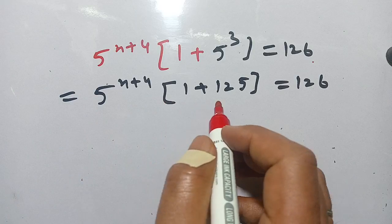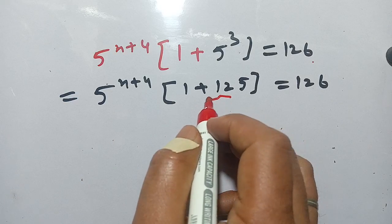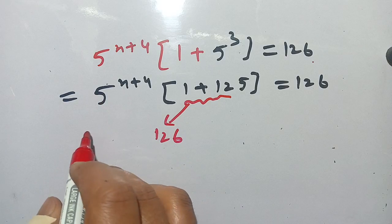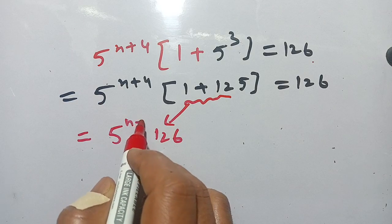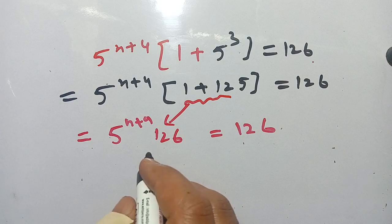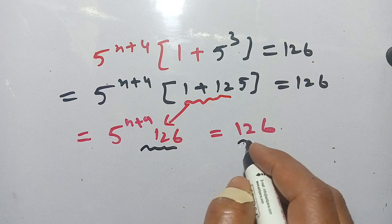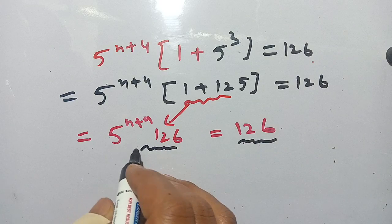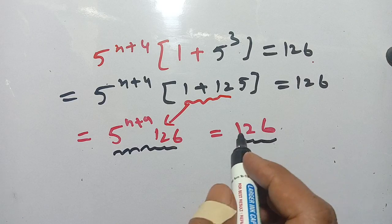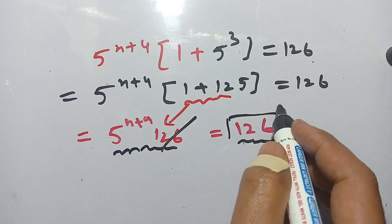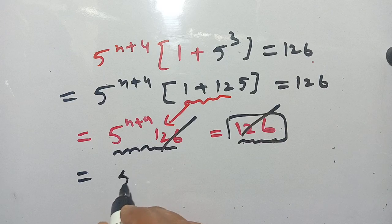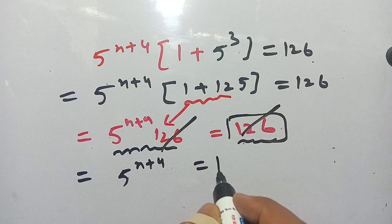Now we add this: 125 plus 1 becomes 126, and 5 power n plus 4 as it is, then it is equal to 126. You see that 126 and 126 can cancel out because it's on the left hand side in multiplication and on right hand side as a single term. Remaining is 5 power n plus 4 is equal to 1.